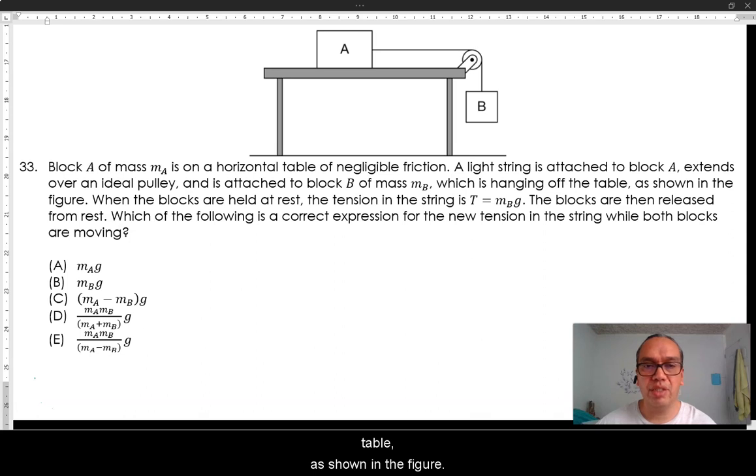When the blocks are held at rest, the tension in the string is T equals MB times G. The blocks are then released from rest. Which of the following is a correct expression for the new tension in the string while both blocks are moving?